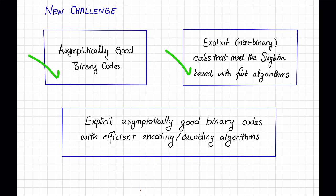What we're going to ask for next is the best of both worlds. We'd like explicit codes, so we actually want to know what they are. We want them to be binary, and we want them to have efficient encoding and decoding algorithms. We also want them to have a good tradeoff between rate and distance. Ideally, we'd want them to have the optimal tradeoff that's achievable by binary codes.